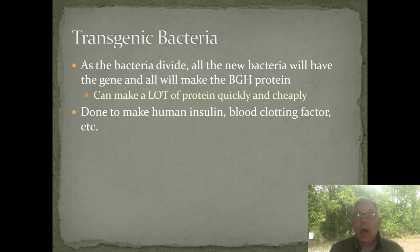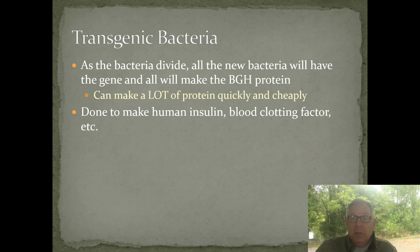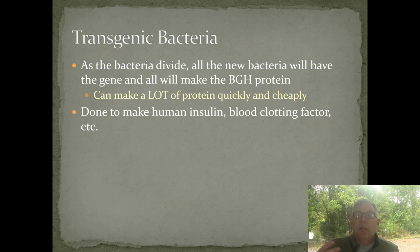This is a common way to use transgenics - putting genes in bacteria so the bacteria can produce lots of a particular protein quickly and cheaply. It's not just bovine growth hormone. This has been used to create insulin for humans - diabetics need to inject themselves with insulin, and this is a way to create a large quantity very cheaply. Blood clotting factor and lots of different proteins have been created by splicing them into bacteria.